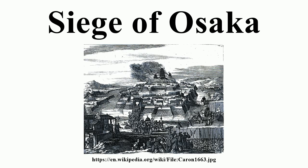The walls of the outer layer of defenses were torn down, and the outer moat of Osaka Castle was allowed to be filled in. Summer Campaign: In April 1615, Ieyasu received word that Toyotomi Hideyori was gathering even more troops than in the previous November, and that he was trying to stop the filling of the moat.